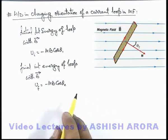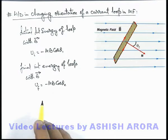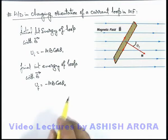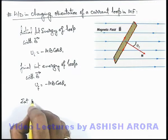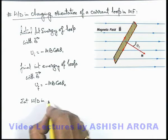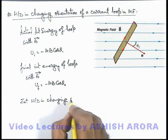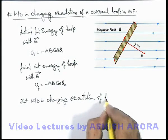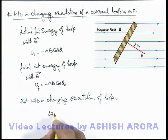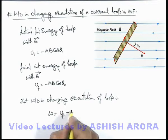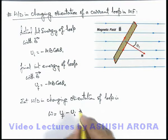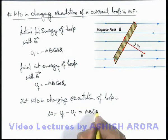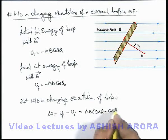As in the final situation the angle between the m vector and the B vector is theta 2. So if we wish to find the external work done in this twist, the external work done in changing orientation of the loop equals the final interaction energy minus the initial interaction energy. Substituting the values, this gives m B multiplied by cos theta 1 minus cos theta 2.